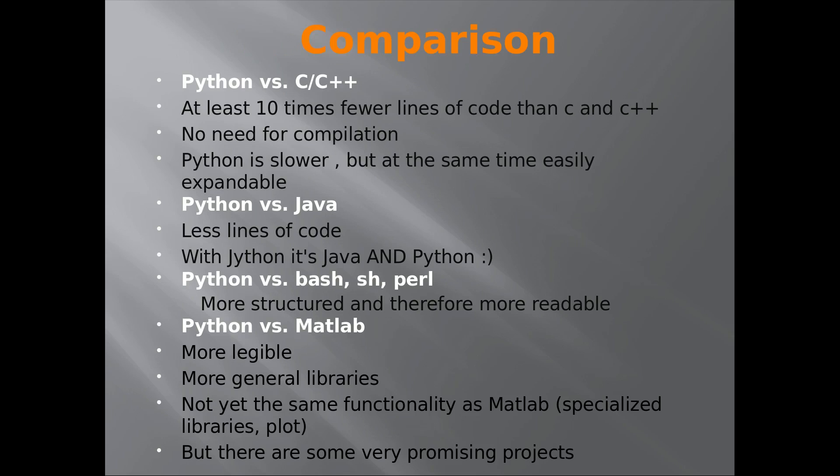A small comparison: Python vs. C or C++. Python has at least 10 times fewer lines of code than C and C++. There is no need to compile. Python is slower, but at the same time it is easily expandable.